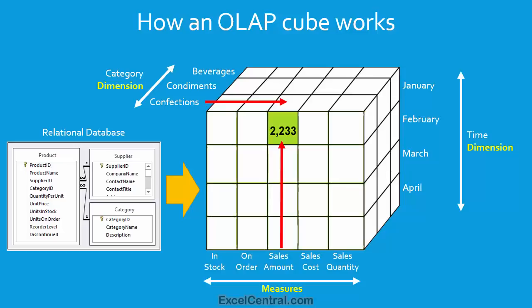Let's now put a value into one of those little boxes and see how we'd retrieve it. When you retrieve a value from an OLAP cube, the value is said to be at a cube intersection — that is, an intersection of a measure and dimensions. I can see that the measure this time is the Sales Amount. So the 2,233 is the total amount of sales at some point. Then I can see that this is in the January slice, and it's in the Confections dimension. So 2,233 is the total sales amount in January in the Confections category.